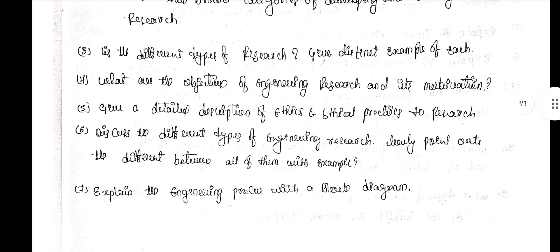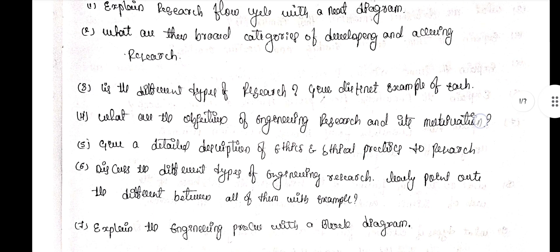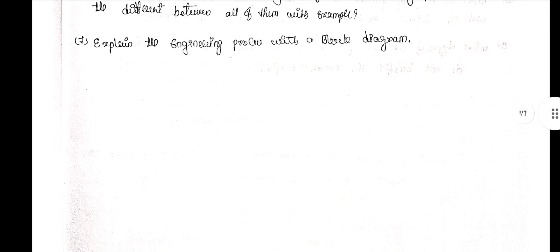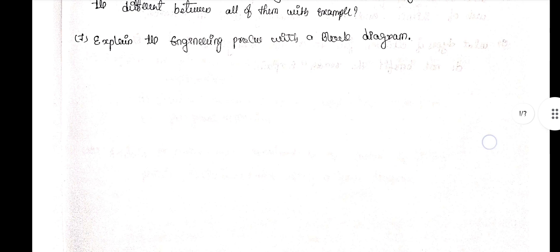Question 7 — explain the engineering process with a block diagram. These seven questions are repeated in both the present model question paper and previous model question papers, so I have covered all seven questions completely for Module 1.